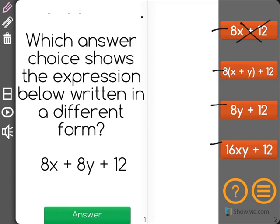Next, we have 8 times x plus y plus 12. This is interesting. What they saw is that both 8x and 8y have a factor of 8 that we can pull out, and then we multiply times x plus y in parentheses and add a 12 in.